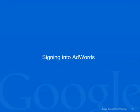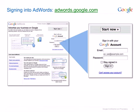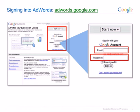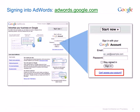Let's have a look at how you sign into AdWords and what you can do if you forget your sign-in details. To sign into your AdWords account, visit the AdWords sign-in page at adwords.google.com. If you know your Google account details, you can enter your email address and password to sign in. If you're having trouble accessing your account, you can click on the provided help link.